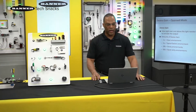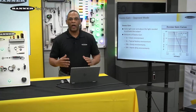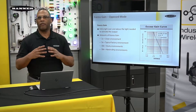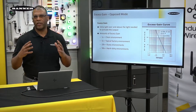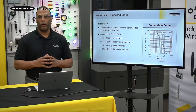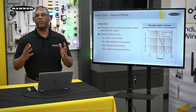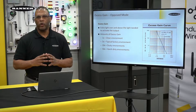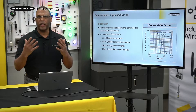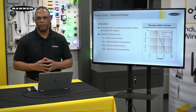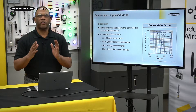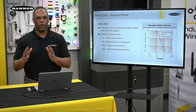Sure Scott, thanks. As Scott mentioned, excess gain is the amount of light energy a sensor gives off. That's very important — more is better. You always want as much as you can have for each application. And that's why we always start off with the oppose mode.